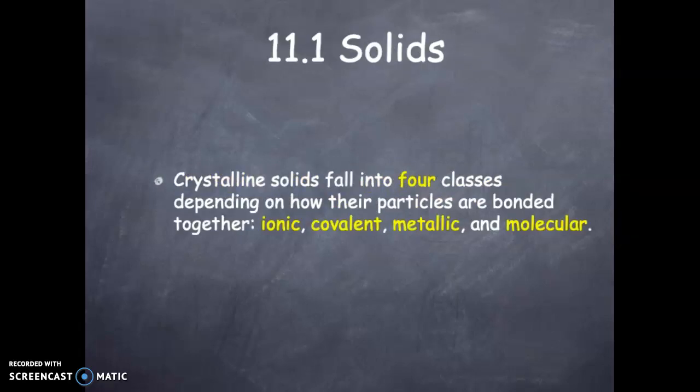Crystalline solids fall into four classes depending on how their particles are bonded together. These are the four: ionic solids, covalent solids, metallic solids, and molecular solids.